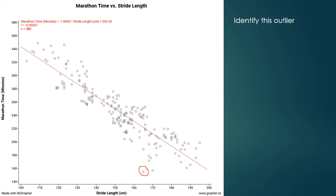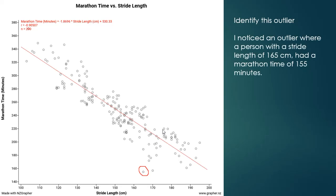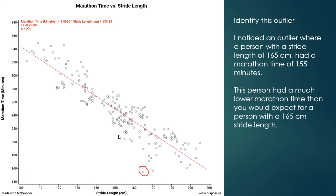There is an outlier in the data. This person has a stride length of 165cm and a marathon time of 155 minutes. This person has a much lower marathon time than what you'd expect for someone with that stride length — if I had a stride length of 165, I'd expect a marathon time of around 220 minutes. So this person's marathon time is much less than expected given their stride length.